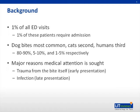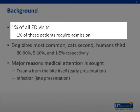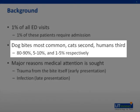In the emergency department setting, mammalian bites compose approximately 1% of all visits annually. Of these patients, 1% will require admission to the hospital. Dog bites are the most common type, composing 80% to 90% of all bites. Cats are the second most common, composing about 5% to 10%, and human bites are the third, approximately 1% to 5% of visits.